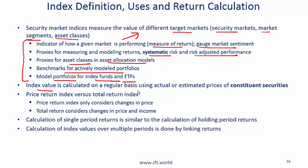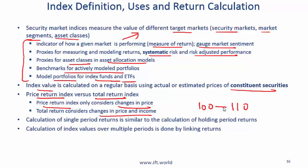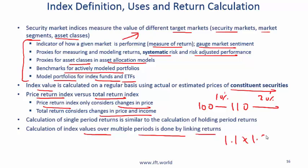Index value is calculated on a regular basis using actual or estimated prices of constituent securities — in the S&P 500 there are 500 constituent stocks. For an index we can calculate either the price return or the total return: price return only considers changes in price, while total return considers changes in price and income. Single-period return is calculated similarly to a holding period return — if the index goes from 100 to 110, the return is 10%. Returns over multiple periods are linked, and the average return is calculated using a geometric mean: for example, 1.1 × 1.2 raised to the power of 1/2, where 2 is the number of periods.